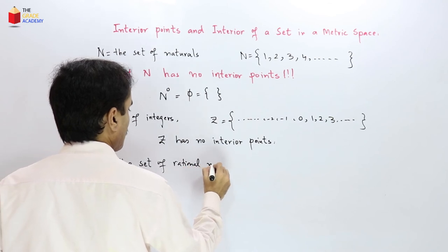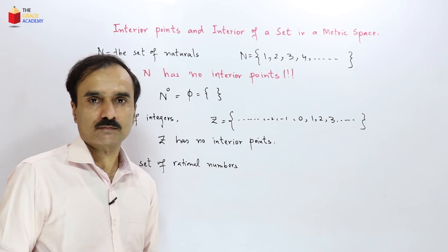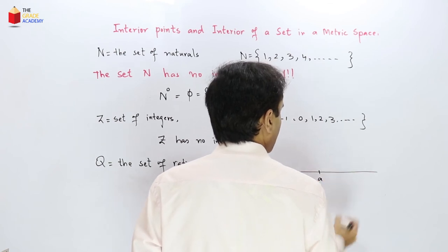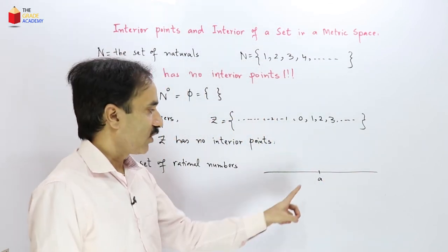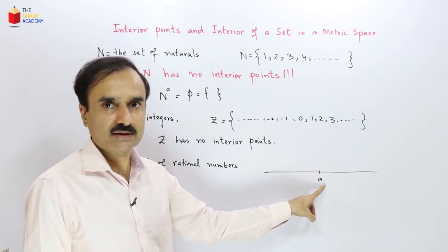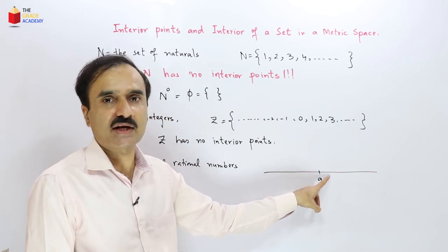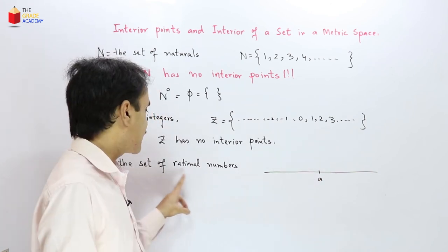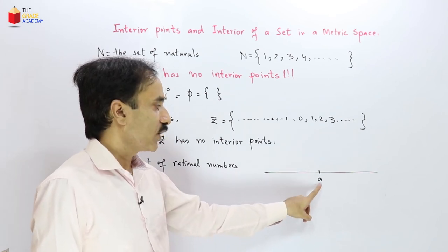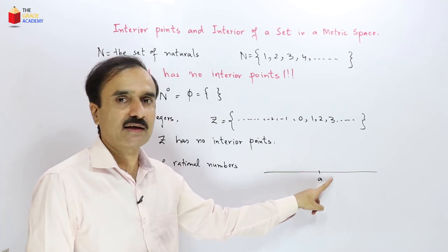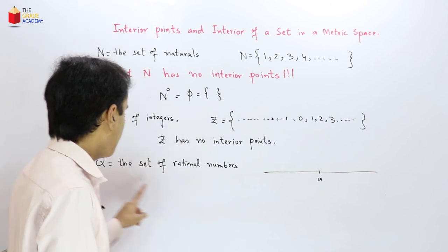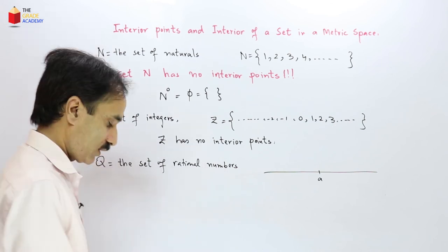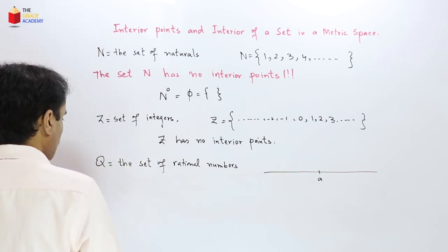How about the set of rational numbers? If I choose any rational number on the real line and draw a sphere around it of any radius, I will also capture irrational numbers within that sphere, since irrational numbers are dense in the reals. Those irrational numbers are not in the set of rationals, so the sphere does not lie inside the rational numbers. That is why the set of rational numbers also has no interior points.